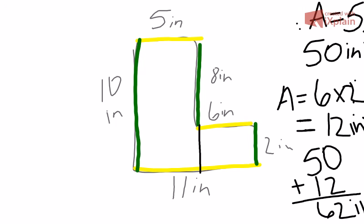So 50 plus 12 equals 62 inches squared. And if you remember, that is what we came up with the last time. It can be confusing, but hopefully this helps you figure out what to do.